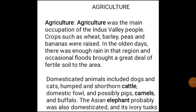Agriculture was the main occupation of the Indus Valley people. Crops such as wheat, barley, peas, and banana were raised. In olden days there was enough rain in the region and occasionally floods brought a great deal of fertile soil. They also domesticated animals like sheep, goat, and oxen.